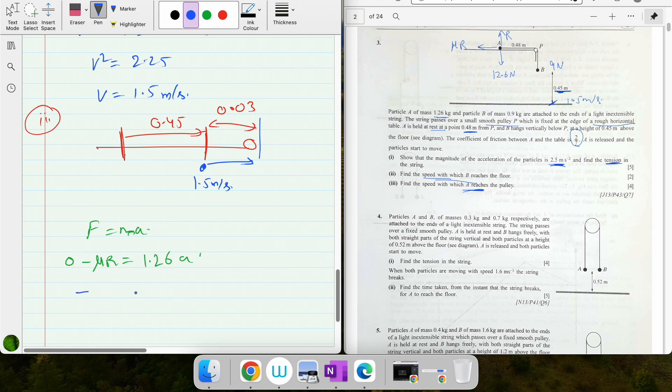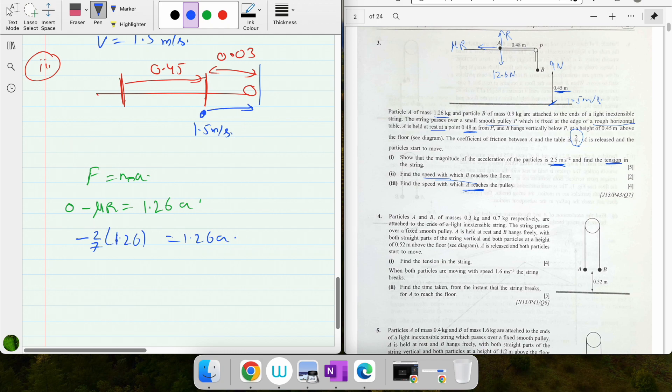Coefficient of friction is given in the equation, that is 2/7. Normal contact force is 12.6, equals 1.26a. So 2 times 12.6 divided by 7 is 3.6. Negative 3.6 divided by 1.26 equals acceleration.